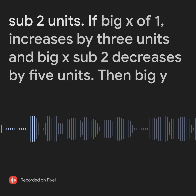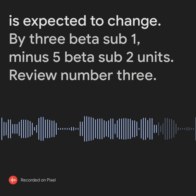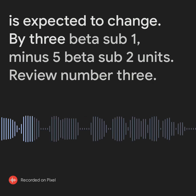If X sub 1 increases by 3 units and X sub 2 decreases by 5 units, then Y is expected to change by 3 beta sub 1 minus 5 beta sub 2 units.